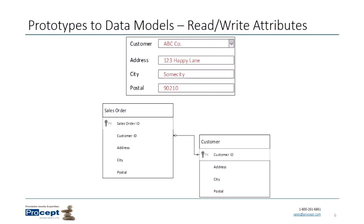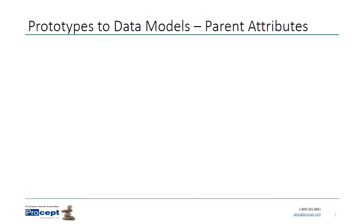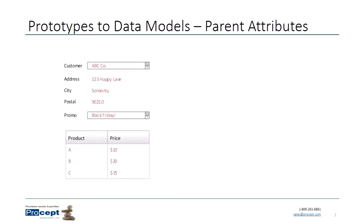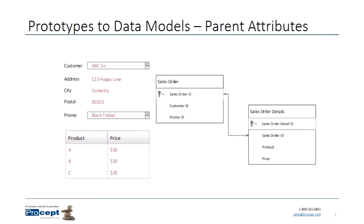Here's another prototype in the same order management context. We select a customer, then there's a selection for a promotion, and below that we have a table. Anytime you see one record at the top with a table of rows below it, that automatically indicates two different types of data — a parent-child relationship in the database. We have the sales order entity and then a sales order details entity for the products and quantities purchased. Also, the promotion being applied at the top means it's applied to the entire order.